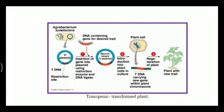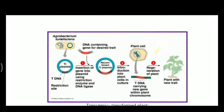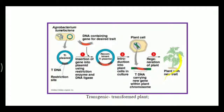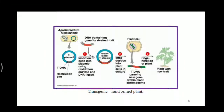We then introduce the modified plasmid into the host plant cell or culture. The tDNA inserted into the plant cell will be inherited to the next plant. We got the plant here with a new trait — whatever we inserted with the help of tDNA insertion. The new plant is regenerated, and the tDNA which is incorporated into the host cell gives us a mutated plant.